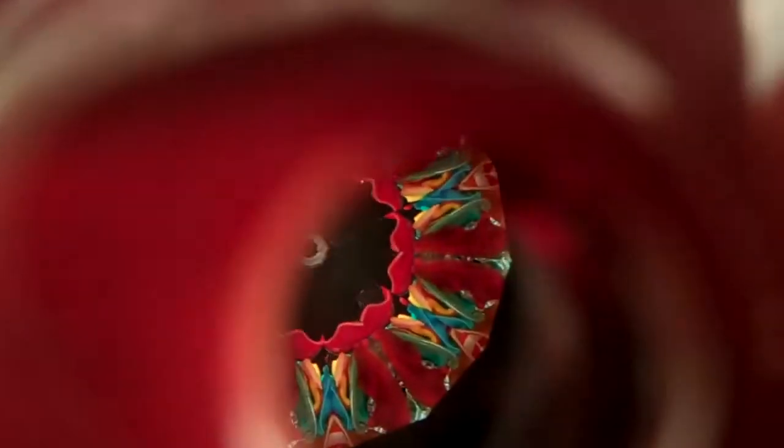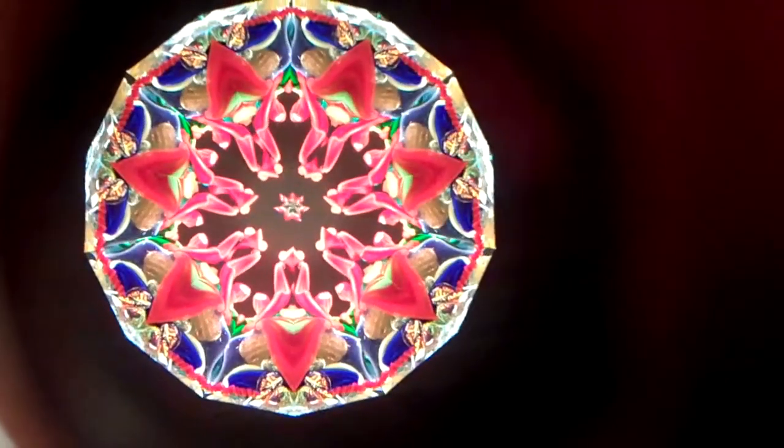Of course, the best part of a kaleidoscope is what you get to see inside. The Mystic Rapture kaleidoscope is a two-mirror system that creates this beautiful seven-point star.